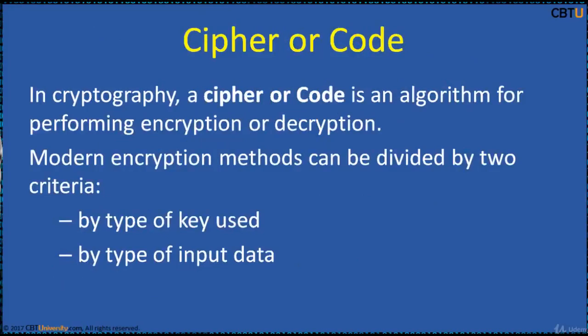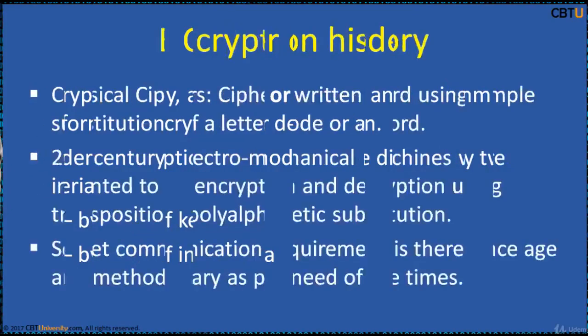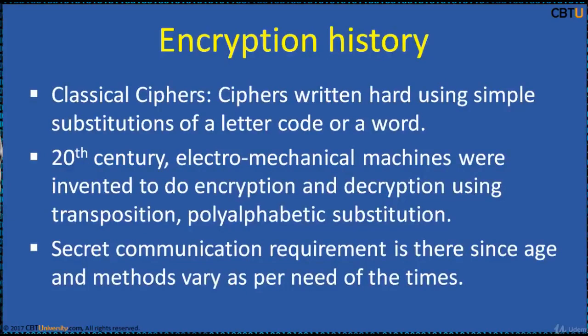In cryptography, a cipher or code is an algorithm for performing encryption or decryption. Modern encryption methods can be divided by two criteria: by the type of key used and by the type of input data. We have a long history of encryption. Classical ciphers used simple substitutions of a letter code or a word. In the 20th century, electro-mechanical machines were invented to do encryption and decryption using transposition and poly-alphabetic substitution. Secret communications have been a requirement since ages, and methods only vary as per the need of the times.